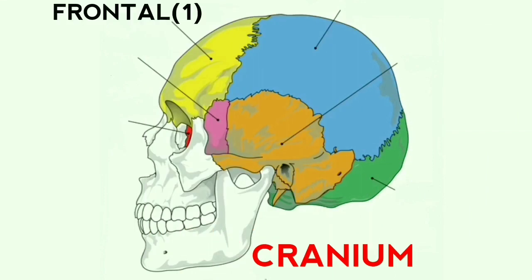In the cranium, the first bone is the frontal bone. It is placed on the front side of the skull and is also called the forehead bone. It makes the eye sockets and the cranium floor. The next bone is the parietal bone. There are two parietal bones in the human skull, situated behind the frontal bone, forming the top side of the cranial cavity.